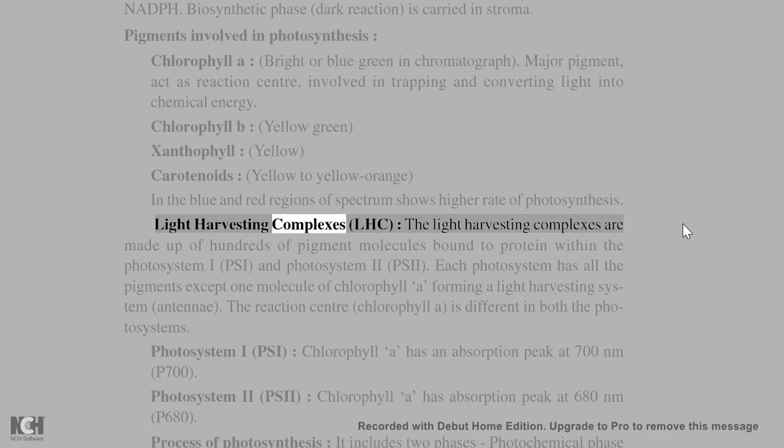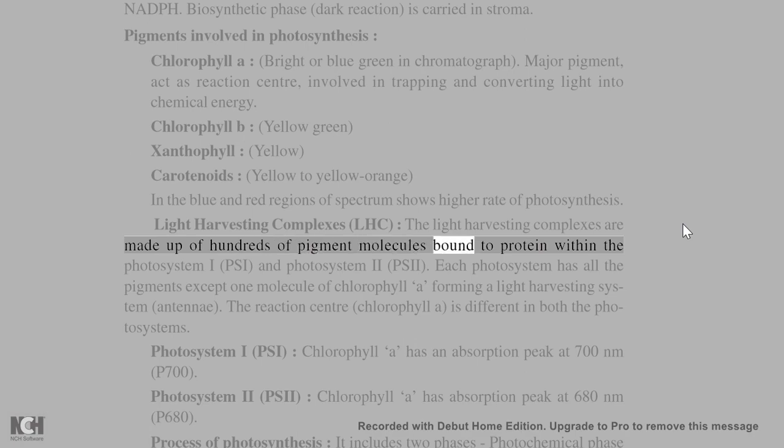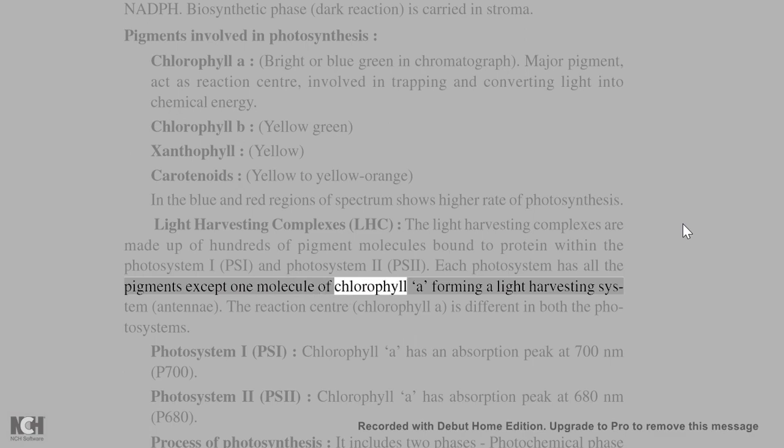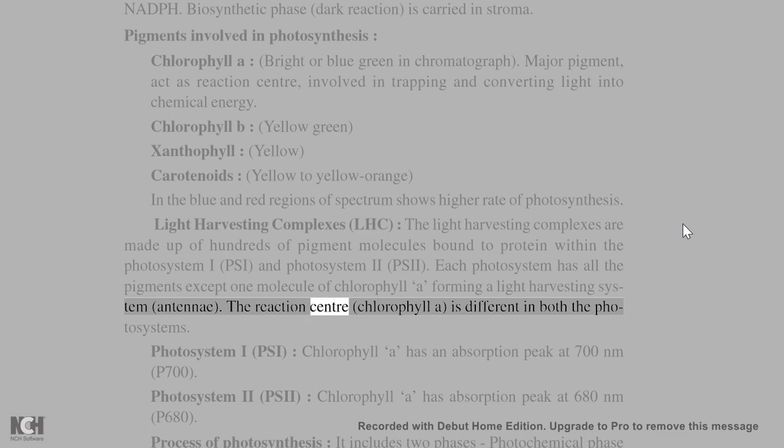Light harvesting complexes (LHC): The light harvesting complexes are made up of hundreds of pigment molecules bound to protein within photosystem I (PSI) and photosystem II (PSII). Each photosystem has all the pigments except one molecule of chlorophyll A forming a light harvesting system (antennae). The reaction center (chlorophyll A) is different in both the photosystems.